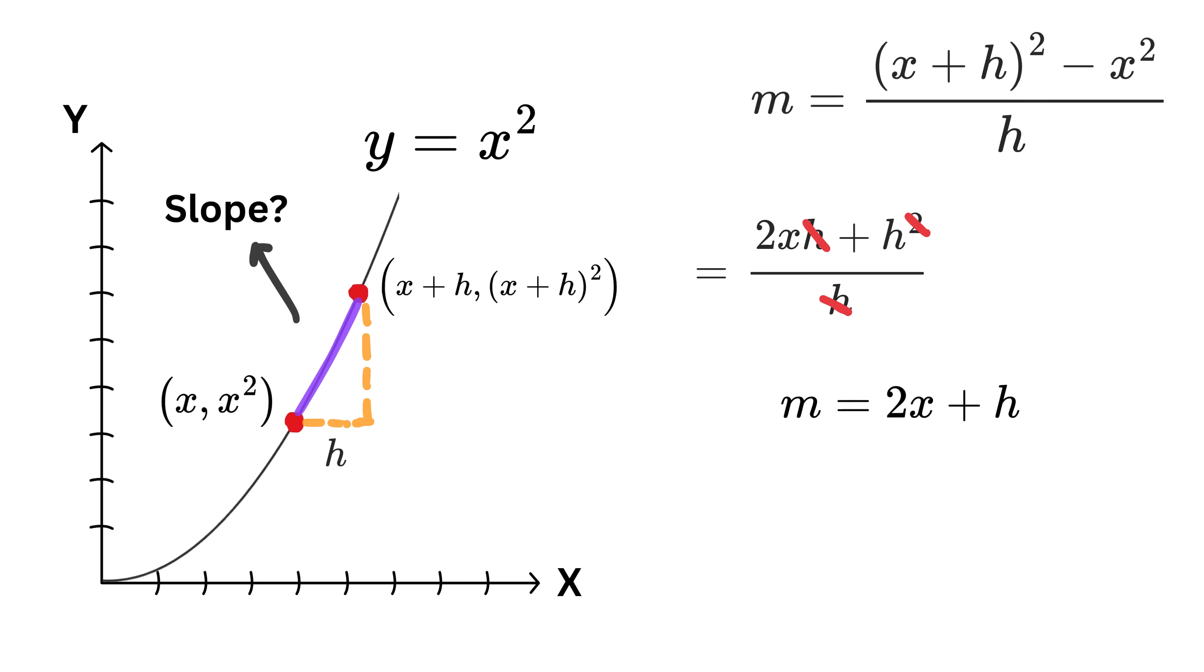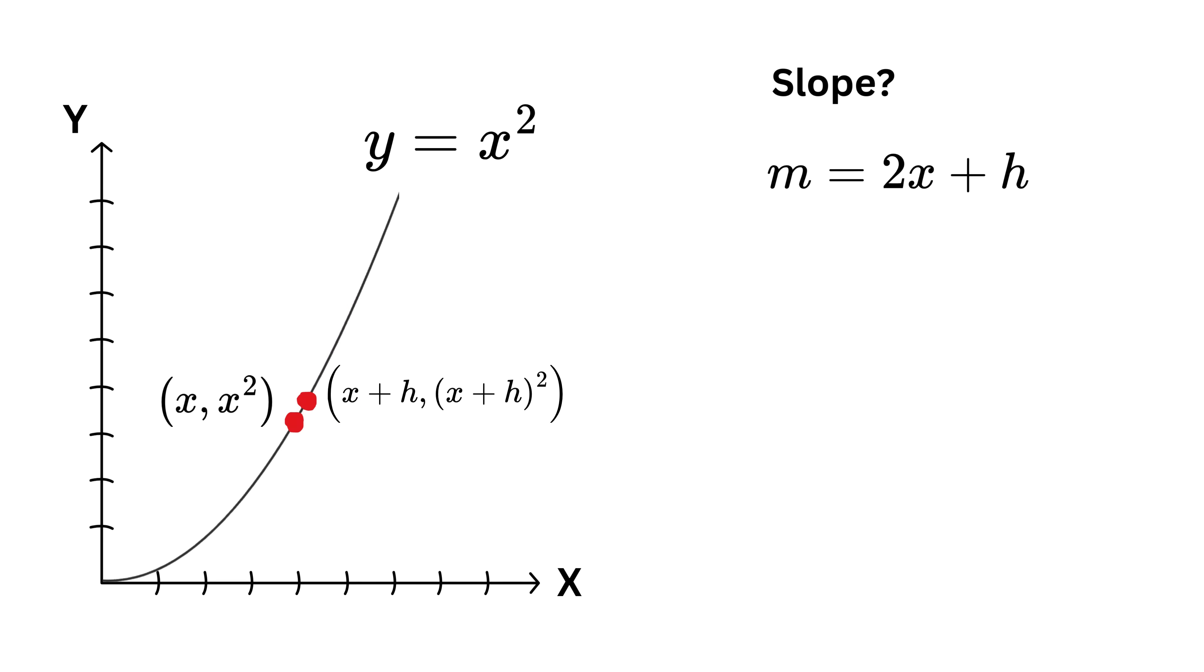Here comes the magic. We want both these points to be as close as possible, which means this h is so small that it is almost invisible to our naked eye. Thus, we say that h tends to 0 and since h is not exactly 0, we put this limit here which stands for limit, which means what is the value of this thing when h is very close to 0 and to solve for it we put h as 0 which gives us 2x as the slope of the curve y equals x squared.